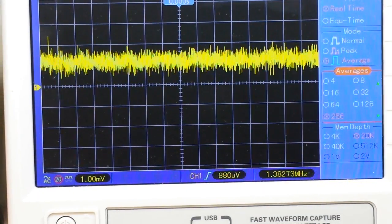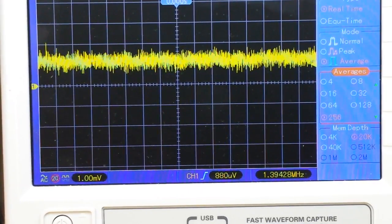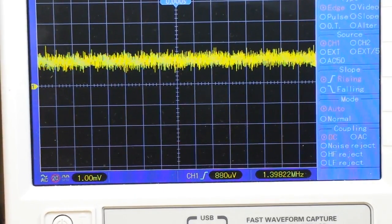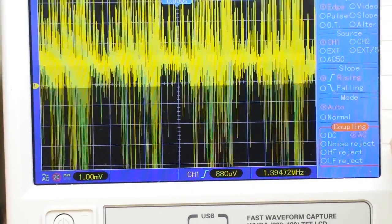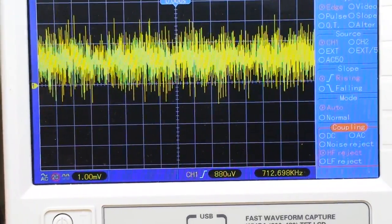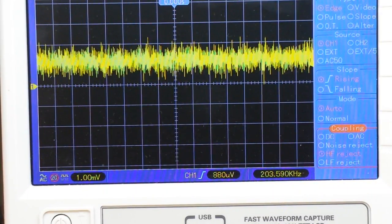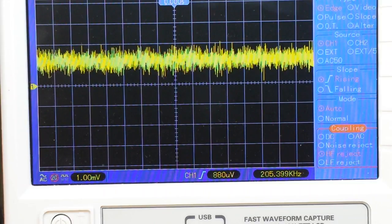And one last thing we're going to do is go into the trigger menu. I keep bumping my scope. Trigger menu, and we're going to go to high frequency reject. And we'll let this settle down here a little bit.